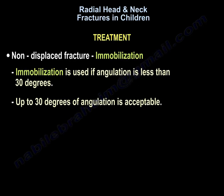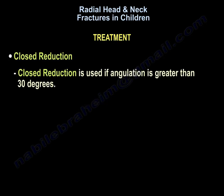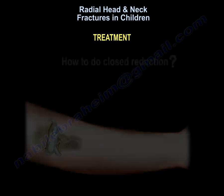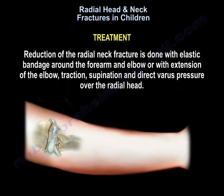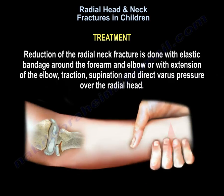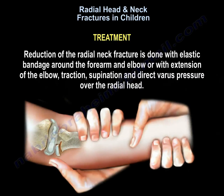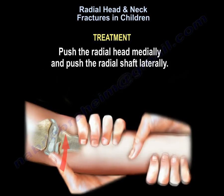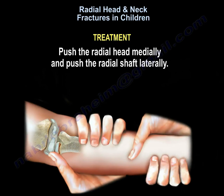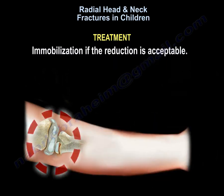Treatment: For non-displaced fractures, immobilization is used if the angulation is less than 30 degrees, because up to 30 degrees of angulation is acceptable. Closed reduction is used if the angulation is greater than 30 degrees. Reduction of the radial neck is done with an elastic bandage around the forearm and elbow, or with extension of the elbow, traction, supination, and direct varus pressure over the radial head — pushing the radial head medially and the radial shaft laterally. Immobilization is applied if the reduction is acceptable.